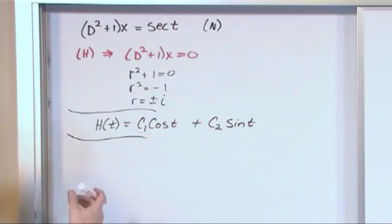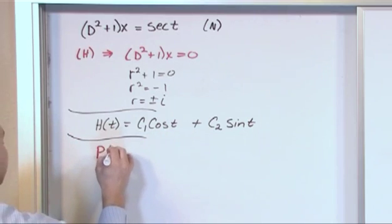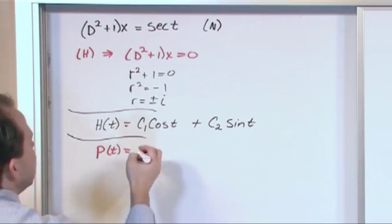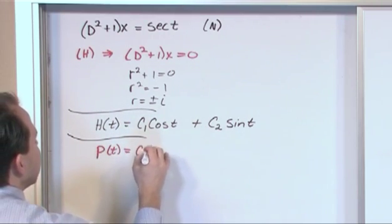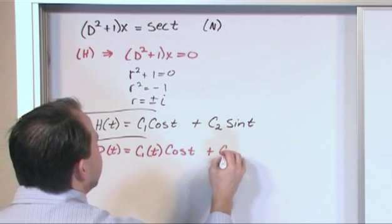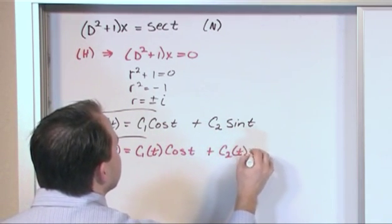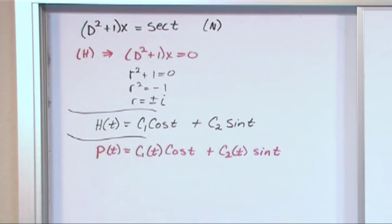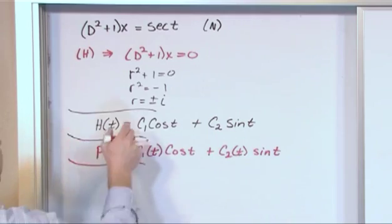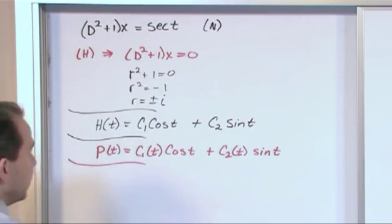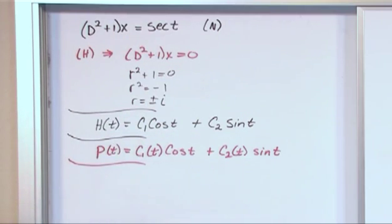Now for variation of parameters, we're going to presume that p of t, that the particular solution that we have is going to be exactly the same form, except we're going to make these constants vary with time. So we're going to make those guys solve or vary with a function of time. Now, we could plug it in here, and we could set it equal and all that, but the dirty work has already been done over the years in the math books.